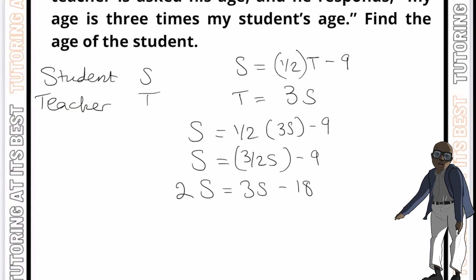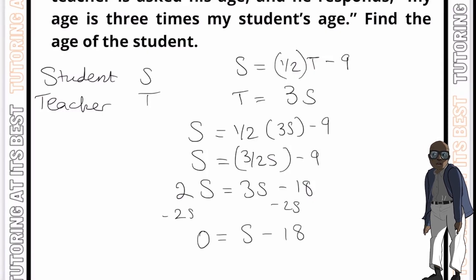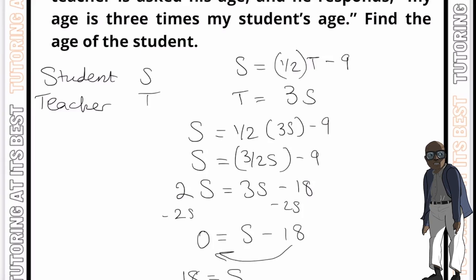Remember now, we've had to multiply both sides by two. And so by doing this, we can subtract two S from both sides as well. So now left with zero equals S minus 18. And if we take the minus 18 over, we now know 18 equals S.